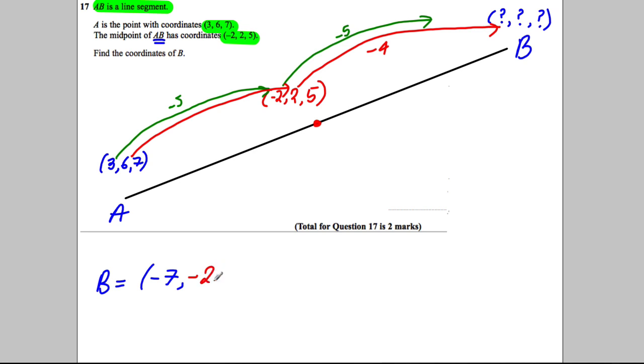And then lastly, how did you get from the 7 to the 5? Well, you took away 2. So take away another 2, you would get yourself to 3. So the coordinates for B are (-7, -2, and 3).